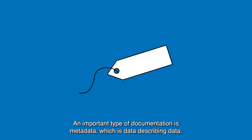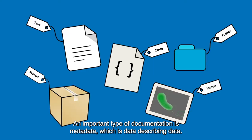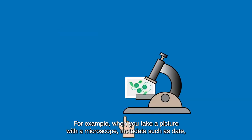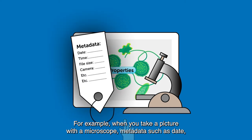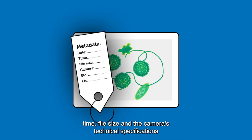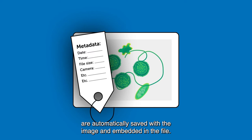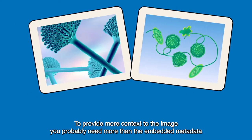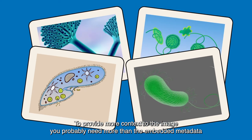An important type of documentation is metadata, which is data describing data. For example, when you take a picture with a microscope, metadata such as date, time, file size, and the camera's technical specifications are automatically saved with the image and embedded in the file. To provide more context to the image, you probably need more than the embedded metadata.